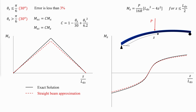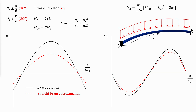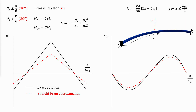For a horizontally curved simply supported beam with a mid-span concentrated load, the torsional moment is calculated similarly — the maximum torsion occurs at the ends and is zero at the mid-span. For a horizontally curved fixed-end uniformly loaded beam, the torsional moment follows a different equation; the maximum torsion occurs at intermediate locations and is zero at both the ends and the mid-span. For a horizontally curved fixed-end beam with a mid-span concentrated load, the torsional moment again has maximum values at intermediate locations, zero at the ends and mid-span.